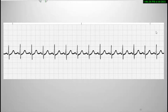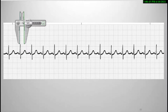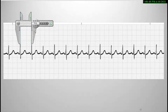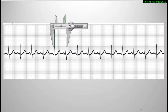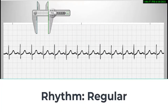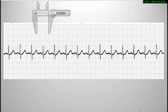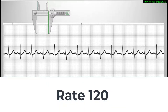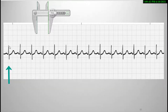Let's take a look at an ECG strip demonstrating the characteristics of sinus tachycardia. Looking at this strip, it appears to be regular. Using a caliper to check the R-to-R intervals confirms it is regular. Next, counting the QRS complexes in this six-second strip gives us 12, and 12 times 10 is 120 beats per minute. Note that the first and last complexes outside the six-second markings were not counted.